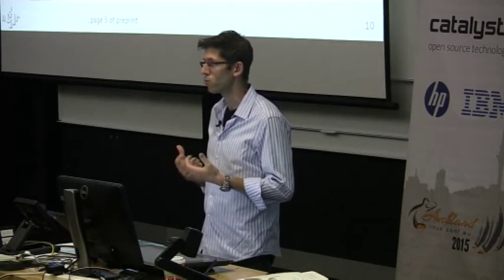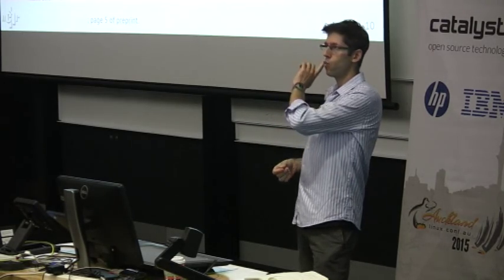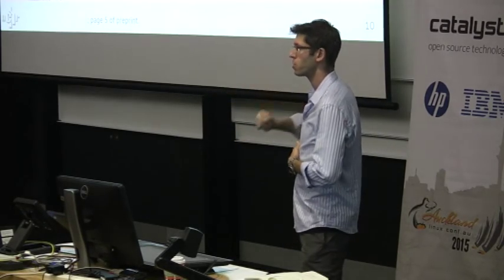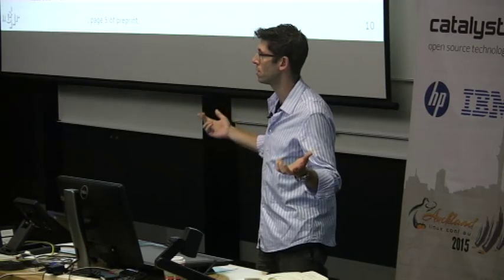This isn't meant to be a talk about Ceph, but I want to describe one more thing: it has a very elegant placement algorithm where you specify as policy where things go, articulating the failure domains. For example, in a data center with rows, you'd articulate a CRUSH rule saying pick from any one row, then find three racks with one server per rack and one disk per server. That way, if you want three copies of the data, it's spread across different failure domains. This is what CRUSH is really good at.